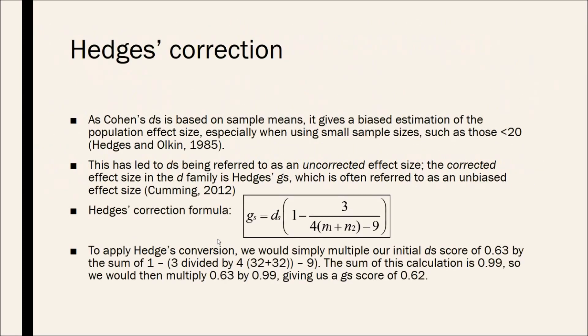As I said, the standard DS is quite upwards biased because it's based on sample size, and to rectify that, we can use Hedges' correction. As Cohen's DS is based on sample means, it gives us a biased estimation of the population effect size, especially when using small sample sizes such as those that are less than 20. This has led to DS being referred to as an uncorrected effect size, and the corrected effect size in the D family is Hedges' GS, which is often referred to as an unbiased effect size. So, you should always try to use the Hedges' correction instead of plain old DS.